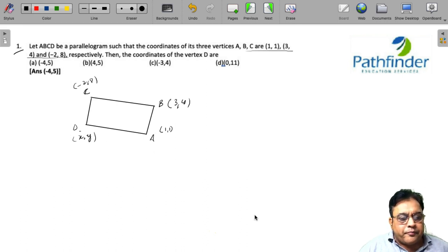Now we know that the diagonals of a parallelogram bisect each other. And since they bisect each other, the midpoint of diagonal AC should be the midpoint of diagonal BD.